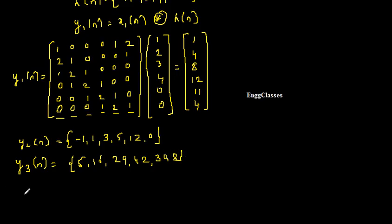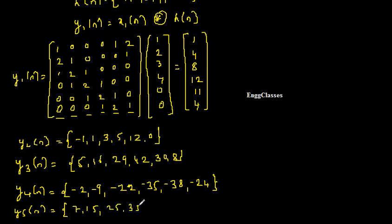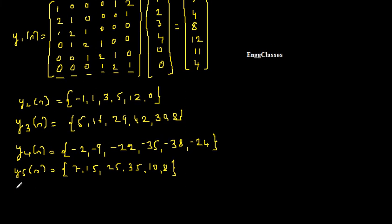Moving further, y4[n] = x4[n] circularly convolved with h[n] gives: −2, −9, −22, −35, −38, −24. y5[n] = x5[n] circularly convolved with h[n] gives: 7, 15, 25, 35, 10, 8. And finally y6[n] = x6[n] circularly convolved with h[n] gives: 0, 1, 2, 3, 4, 0.